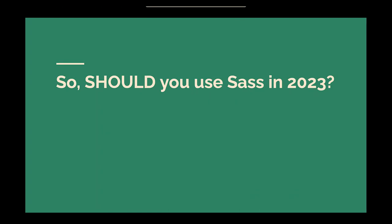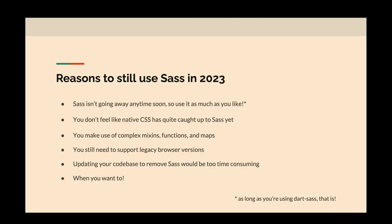So, should you use SAS in 2023? The cop-out answer: it depends. Here are some reasons to still use SAS in 2023. It's not going away anytime soon because it's used all over the place. Just make sure you're using Dart SAS — don't use older deprecated versions that aren't getting new features. Maybe you don't feel like native CSS has caught up quite yet, and that's valid — things like mixins, functions, and loops are still useful and native CSS doesn't do those.